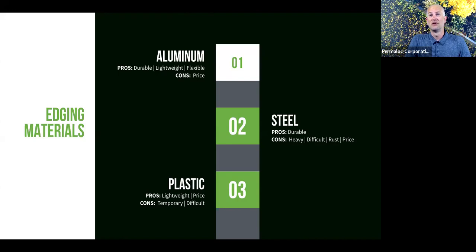If there's any drawback to aluminum, it is that it can be a bit more costly than some other materials. However, its longevity and ease of working with it can save you money in the long run — so even though it might cost a little more upfront, you may save more money over time.